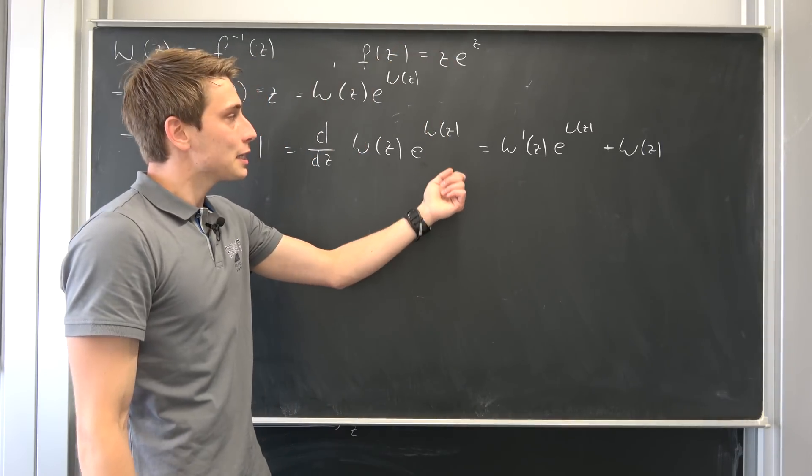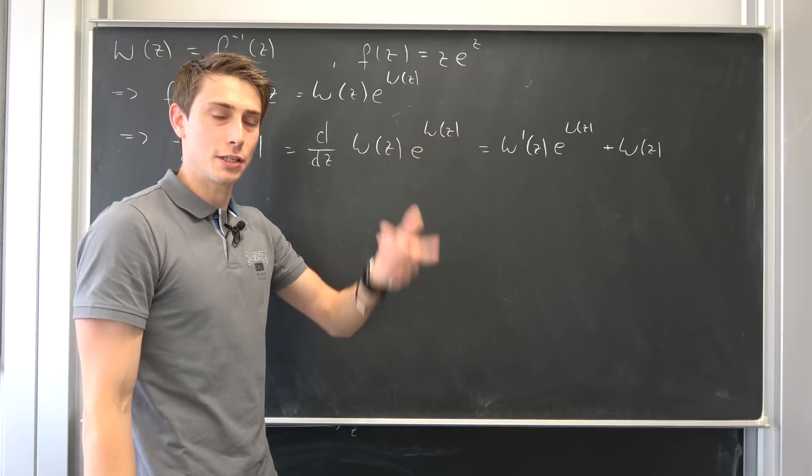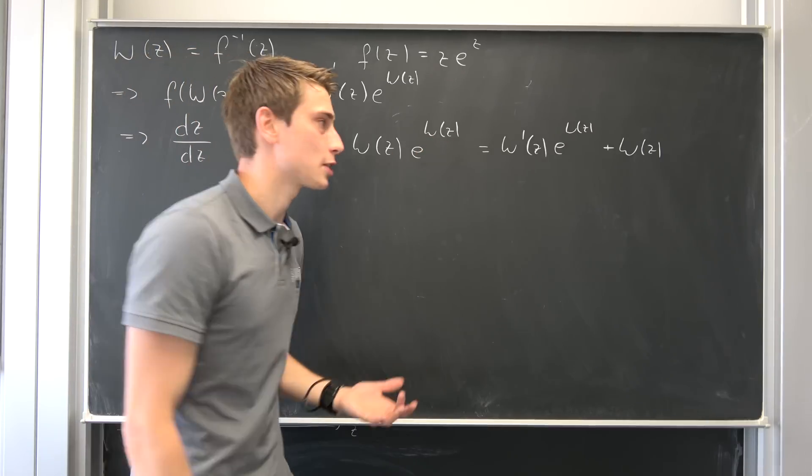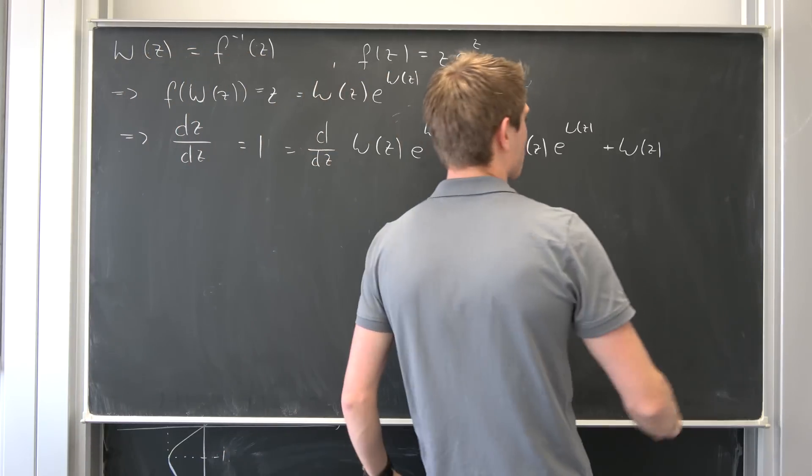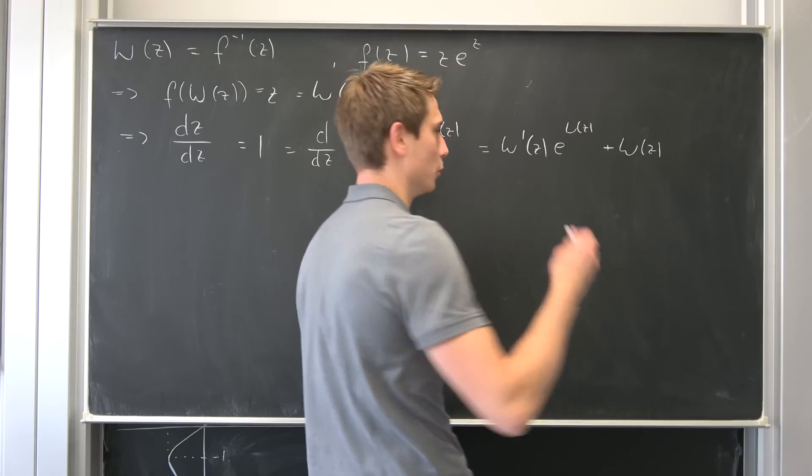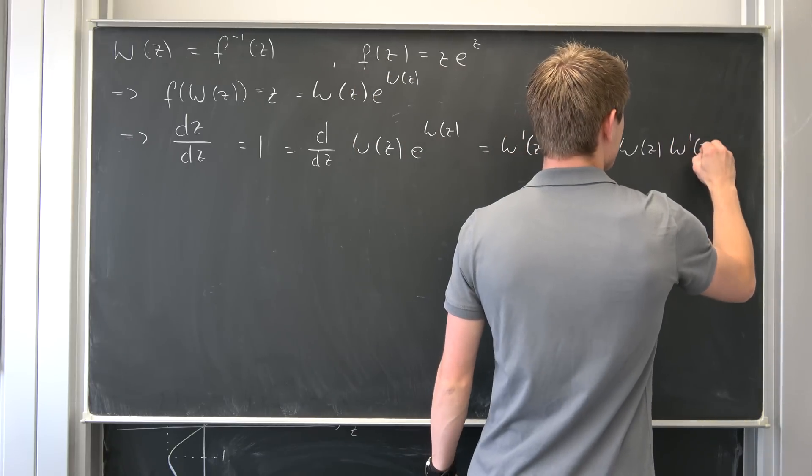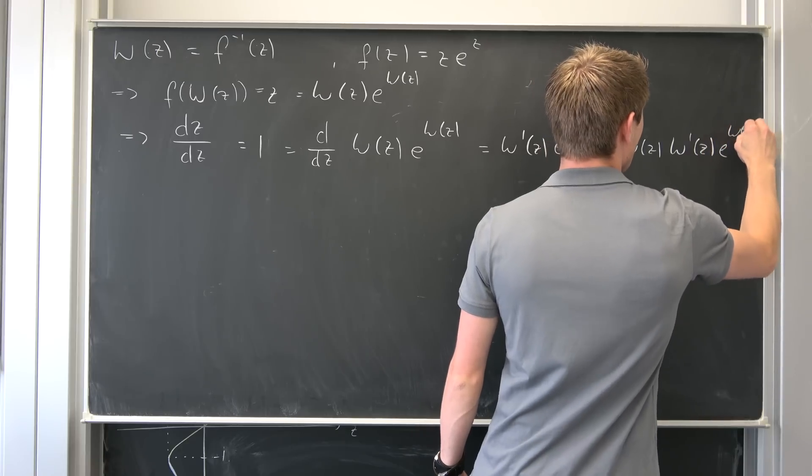Well, it stays as it is, but we need to drag this argument down and differentiate it, because we need to use the chain rule. So Lambert W of z multiplied by e to the Lambert of z.